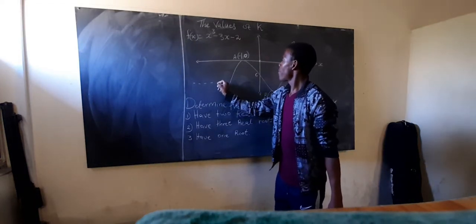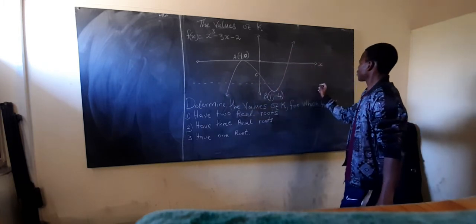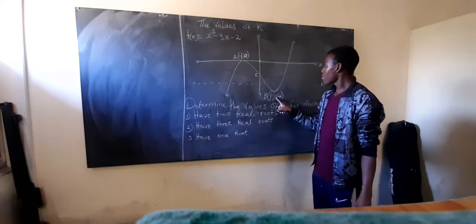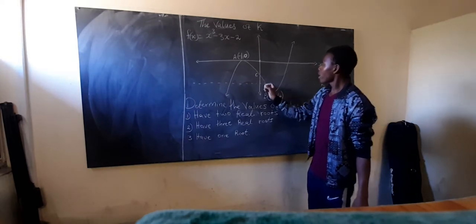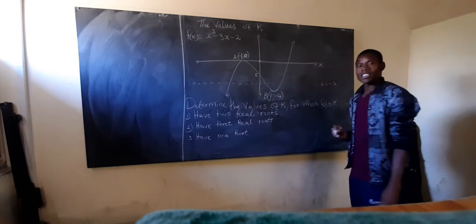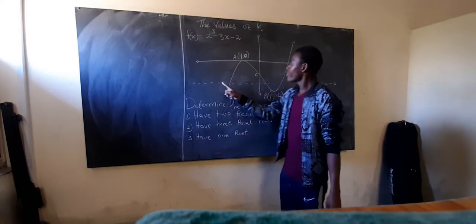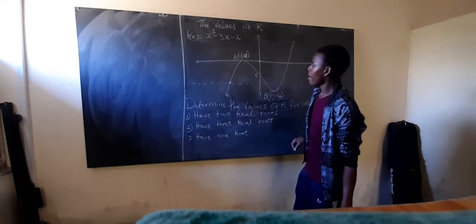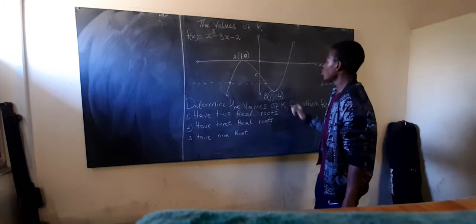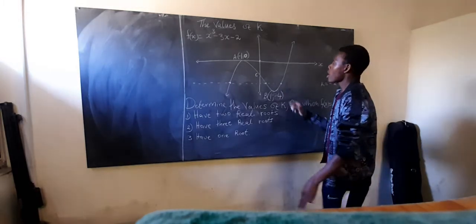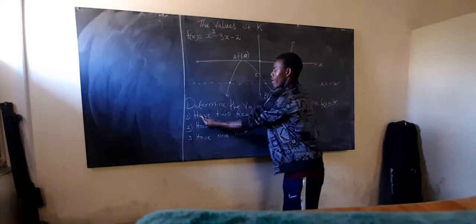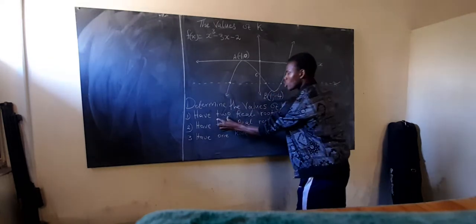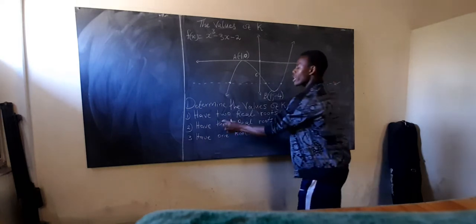If we draw a horizontal line at k = -2, noting that the minimum turning point is at y = -4, we can see this line intersects the graph three times — at one point, a second point, and a third point. So k = -2 gives three intersections, which is not what we want. We are looking for two real roots, meaning the line must intersect the graph exactly twice.